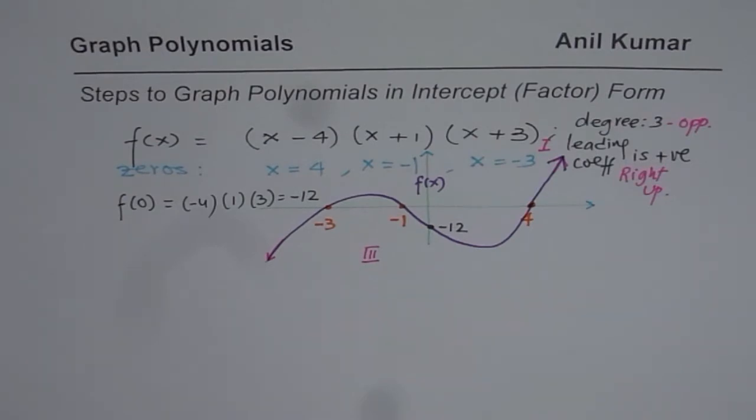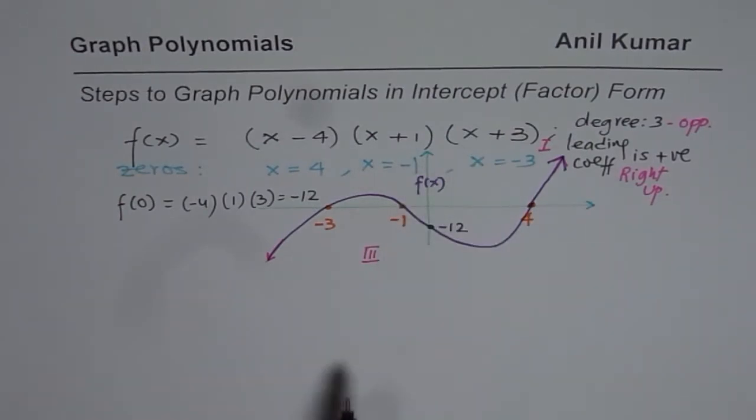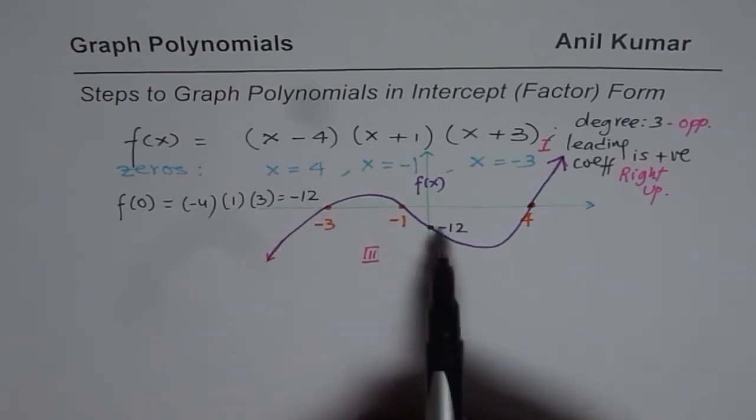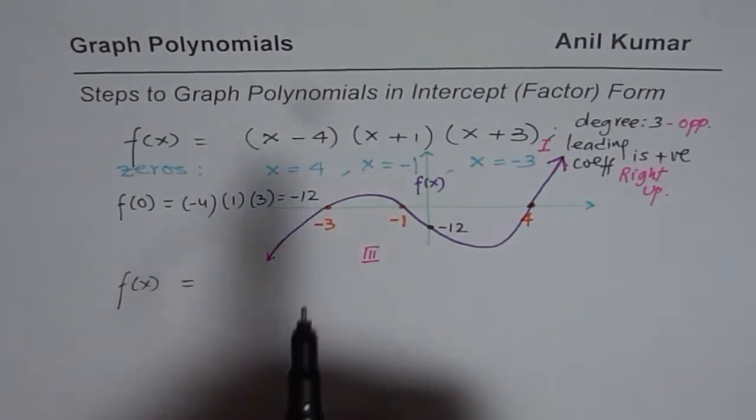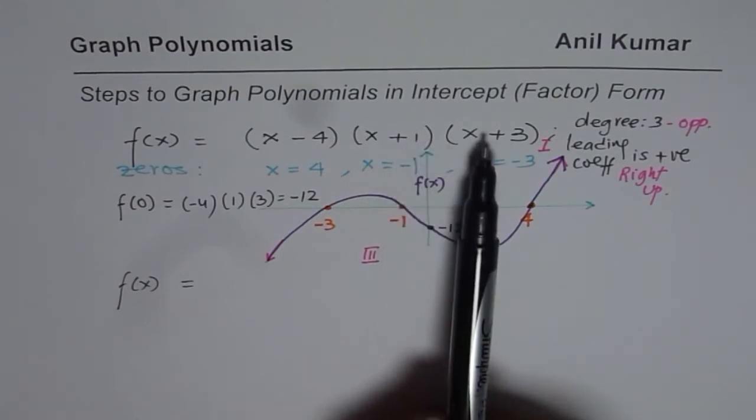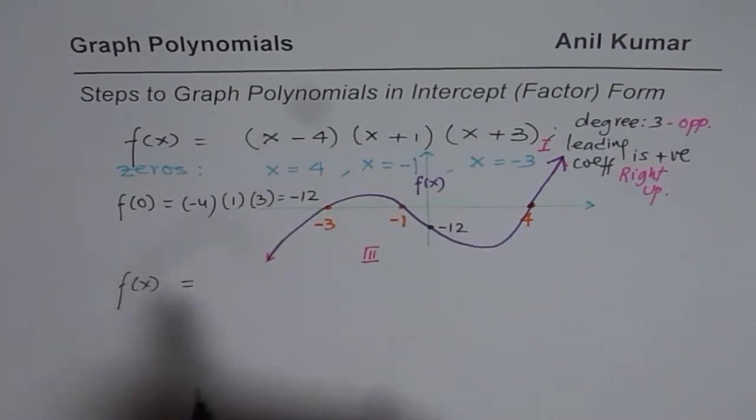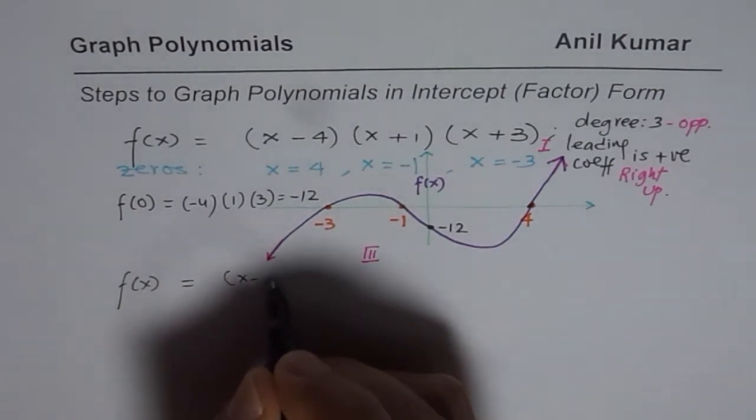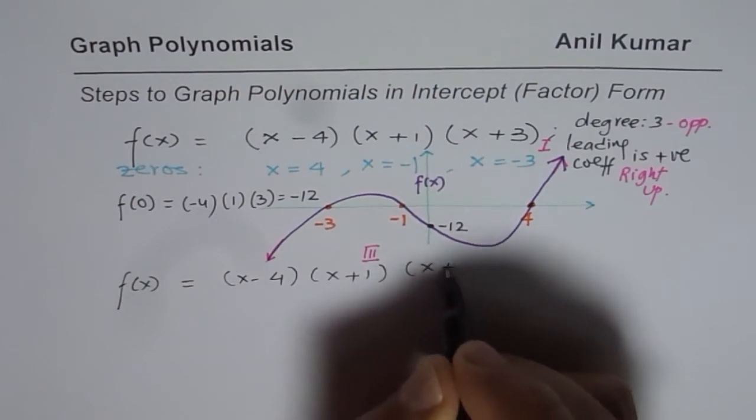So that is one way we can sketch and probably the most simplest of all ways. Let me change this equation and I will sketch another graph. And that is the reason why I kind of squeezed it in. So this time what I am going to do is, I am going to explain what really happens if I change the multiplicity of these zeros. So I am making a small change here. We have x minus 4 times x plus 1 times x plus 3.